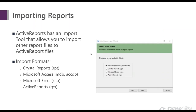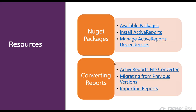Another useful tool is the importing tool, which allows you to import other report files to Active Reports files. The formats supported include Crystal Reports, RDLC, Microsoft Access, Microsoft Excel, and Active Reports RPX. To clarify that last one — RPX refers to our section report template, meaning you can convert section report templates to another Active Reports template, such as RDL or page report.